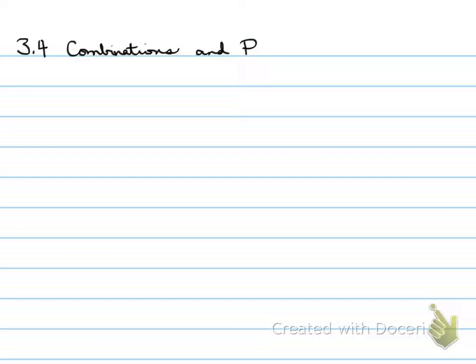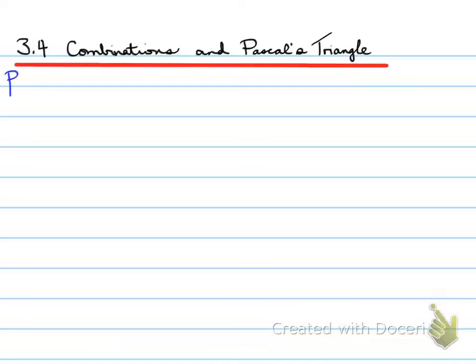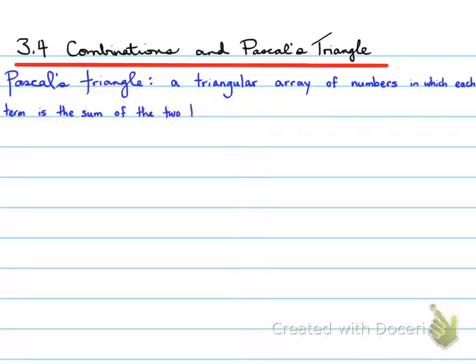All right, 3.4, combinations and Pascal's triangle. So how are those two linked? Well, Pascal's triangle is a triangle, a triangular array of numbers in which each term is the sum of the two terms above it.